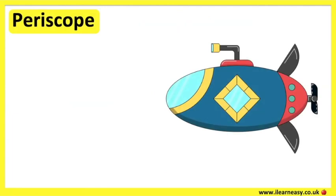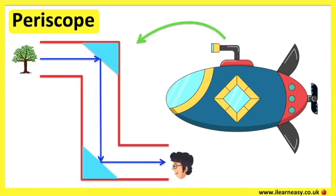An example of this is a periscope — a piece of equipment used in submarines to see what is happening above the water. The mirrors used in a periscope reflect the light travelling through it, which reaches the eye and allows them to see anything above the water.